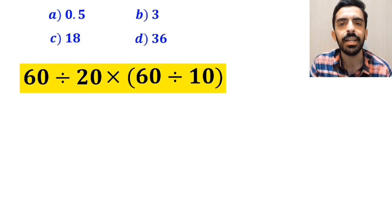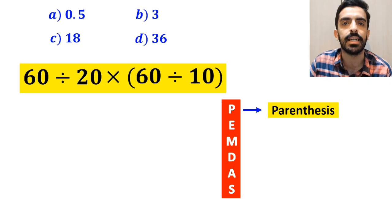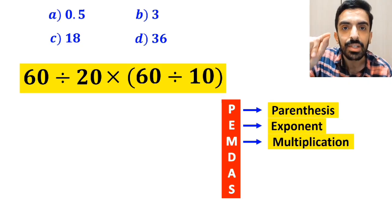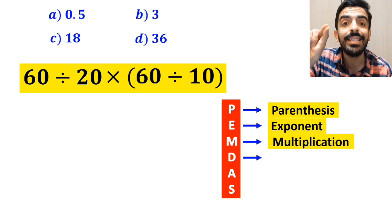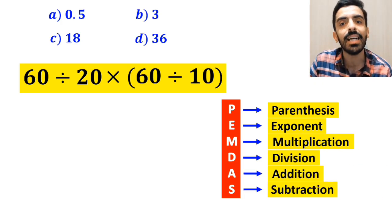To solve this question, we need to follow the PEMDAS rule step by step. According to this rule, P stands for parenthesis, E stands for exponent, M stands for multiplication, D stands for division, A stands for addition, and S stands for subtraction.